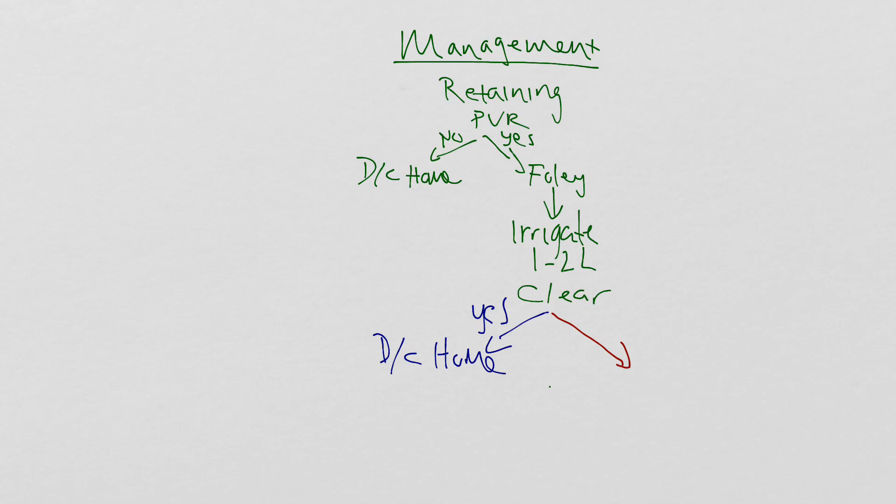If you can't get the urine to be clear after irrigation, or if the patient fails the observation period, you'll want to try to irrigate one more time. If at this point you have no luck, you'll need to admit your patient for CBI, or continuous bladder irrigation, and it's at this point that you then want to consult urology.